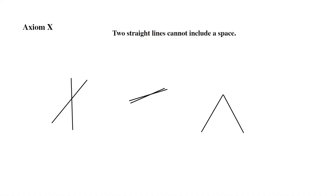Axiom 10: Two straight lines cannot include a space. Here we have three pairs of two straight lines, and these pairs all do not include a space. But when we add a third line, that third line creates a space — a triangle. If we add a fourth line, we get another space. So what this axiom is saying is that two straight lines cannot include a space — it will never happen — but by adding a third line, there is a possibility that the three lines may include a space.